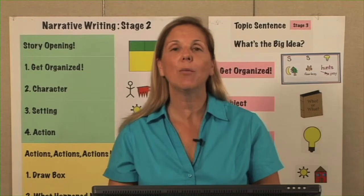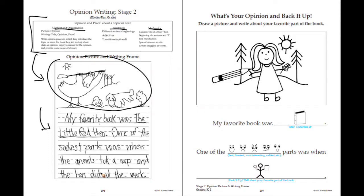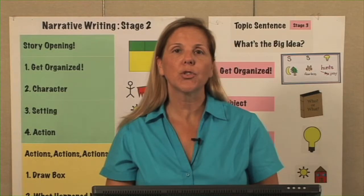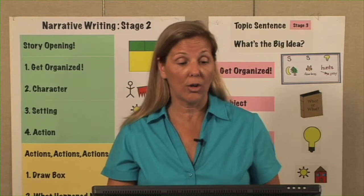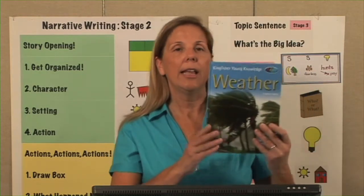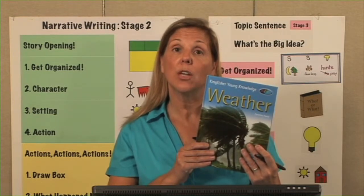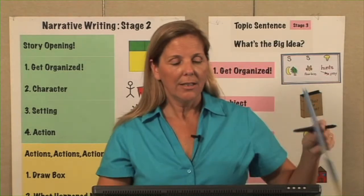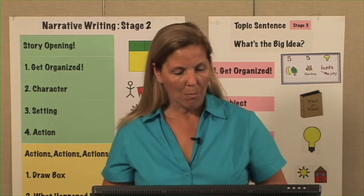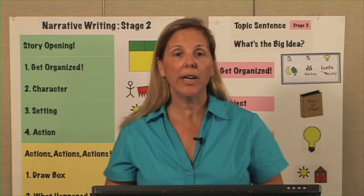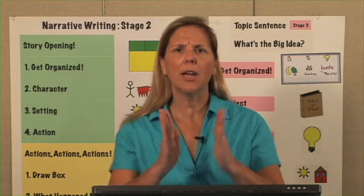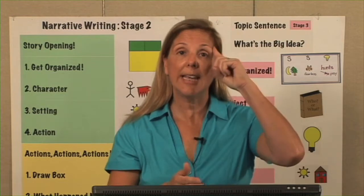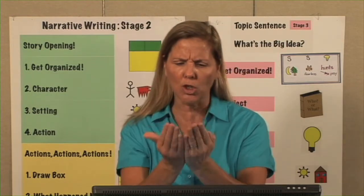First, we finish reading a story and we always declare that we have an opinion. At stage two I'll show you how to write an opinion — we'll use The Little Red Hen for a story opinion, and then an information book called Weather for an informational opinion. An opinion is when I, the reader, tell what I think or how I feel about information or a story I have read.